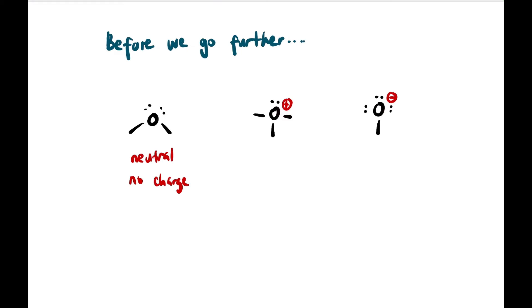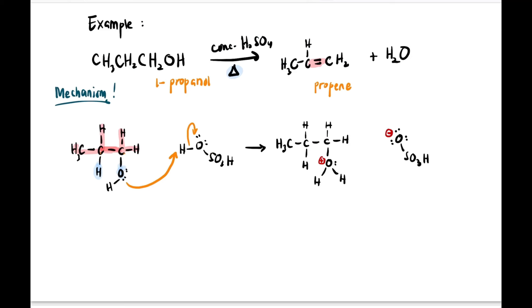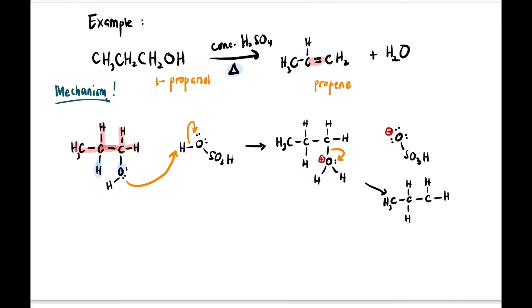Let's continue the mechanism. Now this H2O+ - what does it do? It will leave the compound as H2O water, leaving CH3CH2C which will become positive now, having lost an electron. We call this a carbocation ion - it is a primary carbocation.